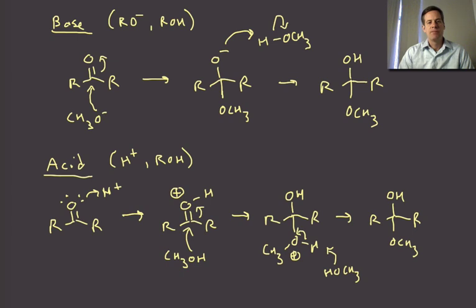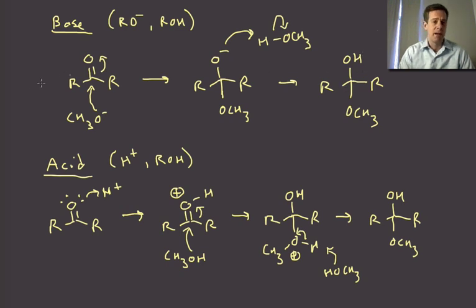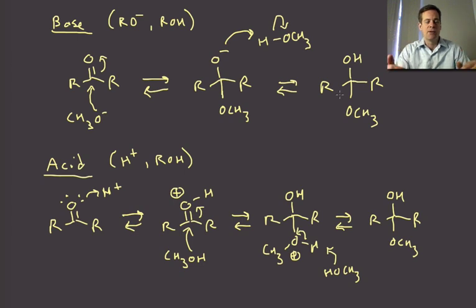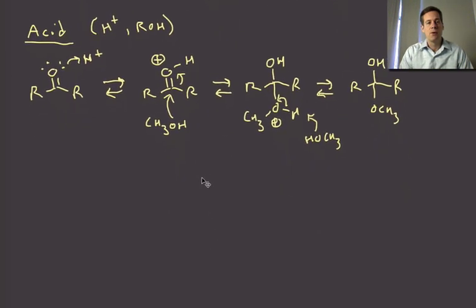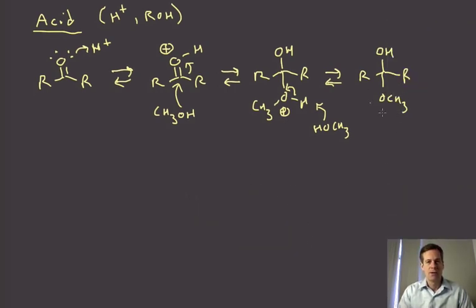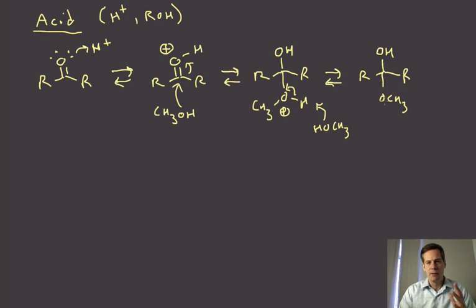In the base-catalyzed case, this is as far as we can go. The base can form the hemiacetal, but then the only thing a base can do to this molecule is pull off a proton and make it go backwards, so it is certainly reversible. The base-catalyzed mechanism has to stop at the hemiketal or hemiacetal. The acid mechanism, however, can actually keep going to do something extremely important and useful: form acetals. We can keep going from hemiacetal to acetal.